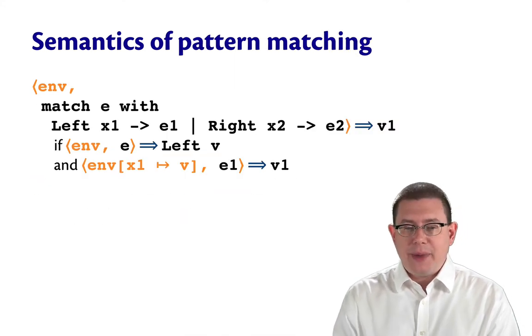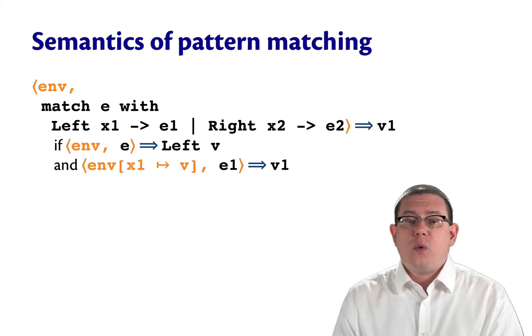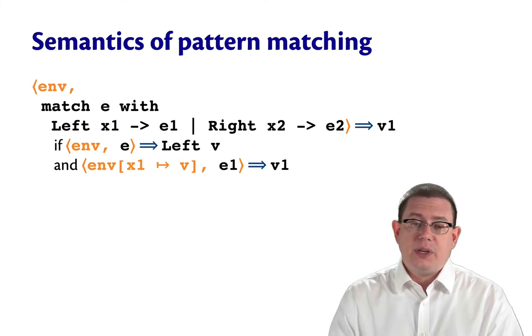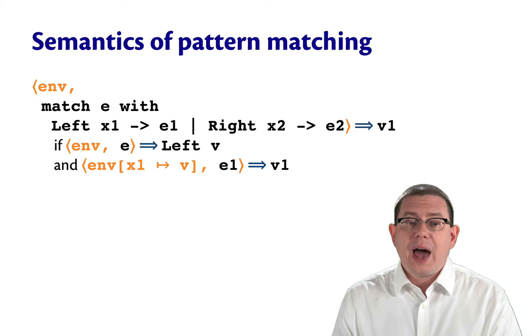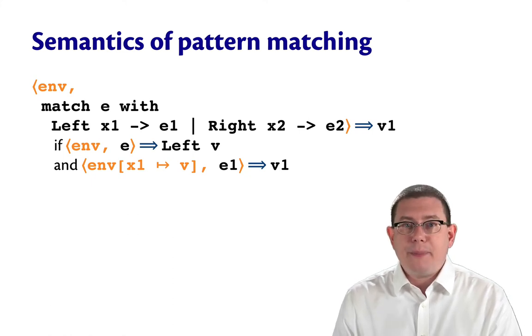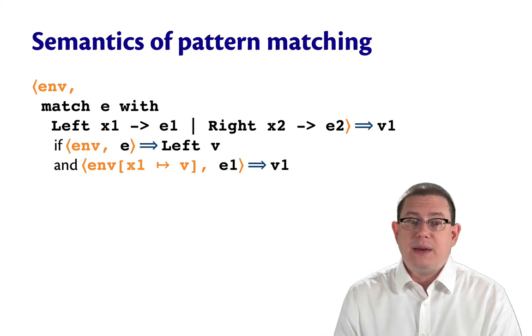And for pattern matching, it's almost exactly the same as before, except that now when we get to evaluating a branch and an expression either E1 or E2, we do actually extend the dynamic environment to map the pattern variable to the value of the expression being matched.